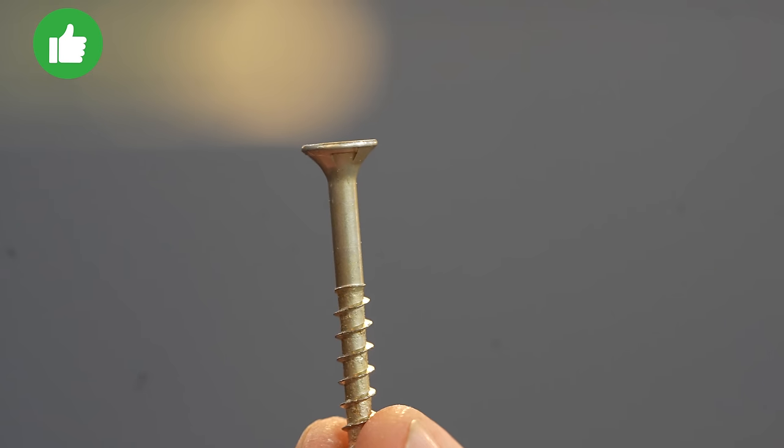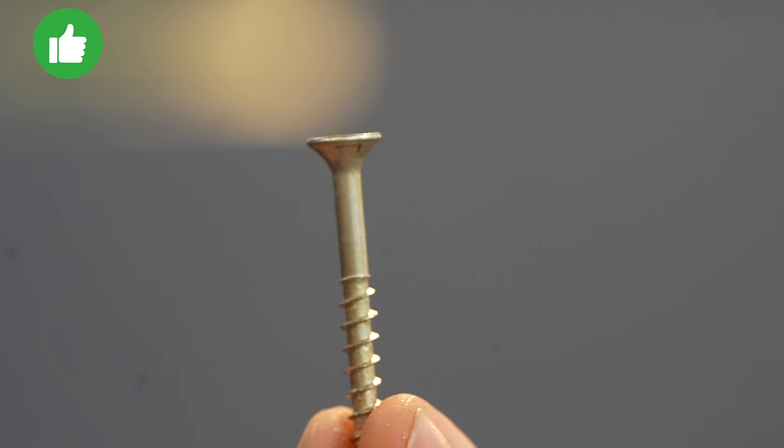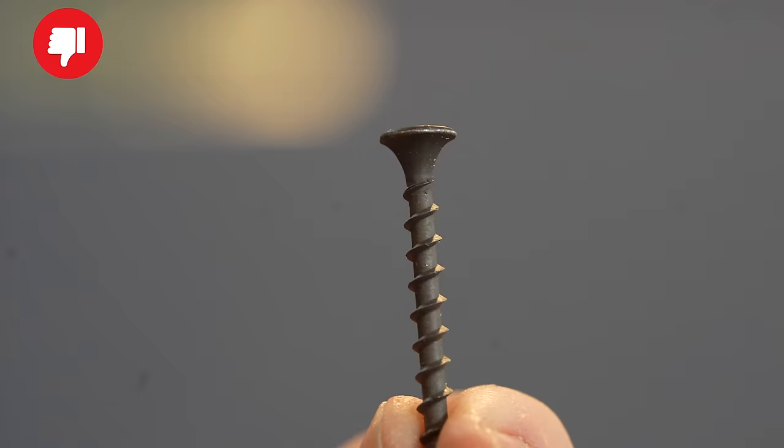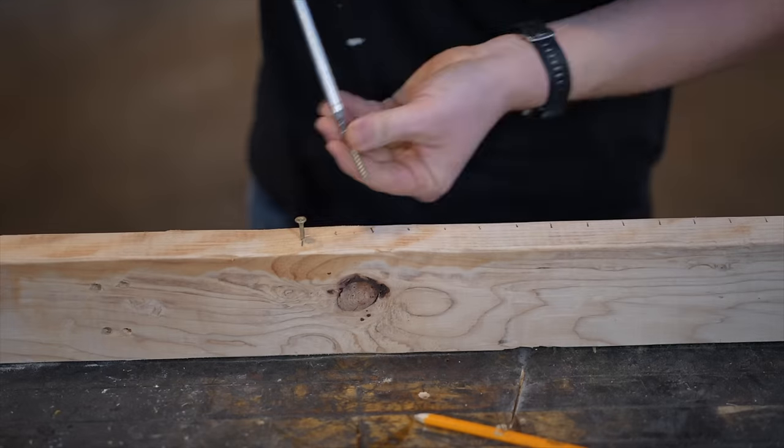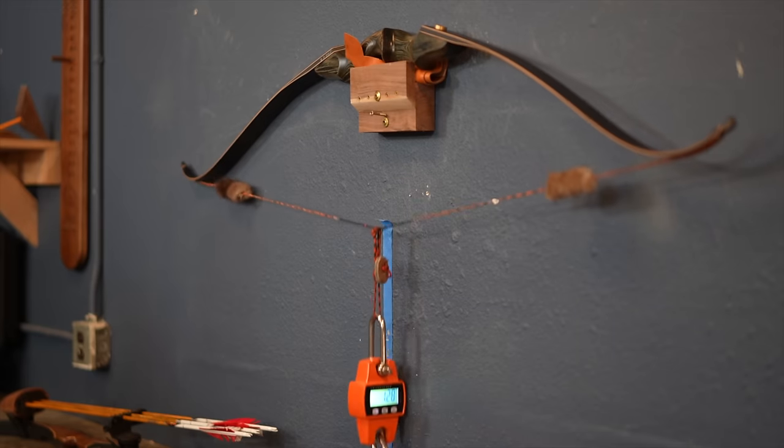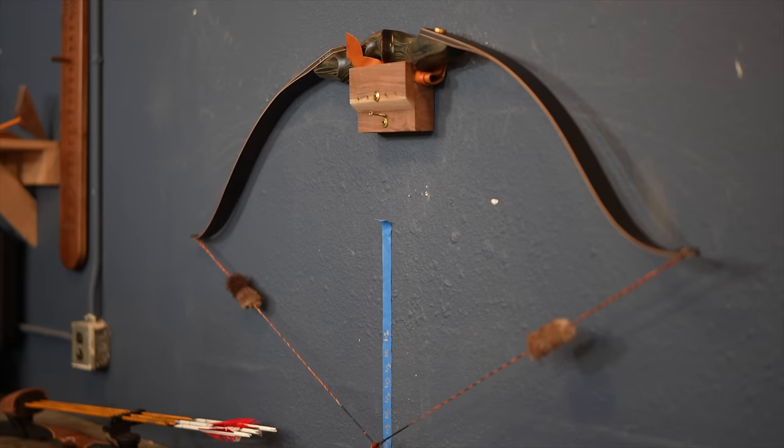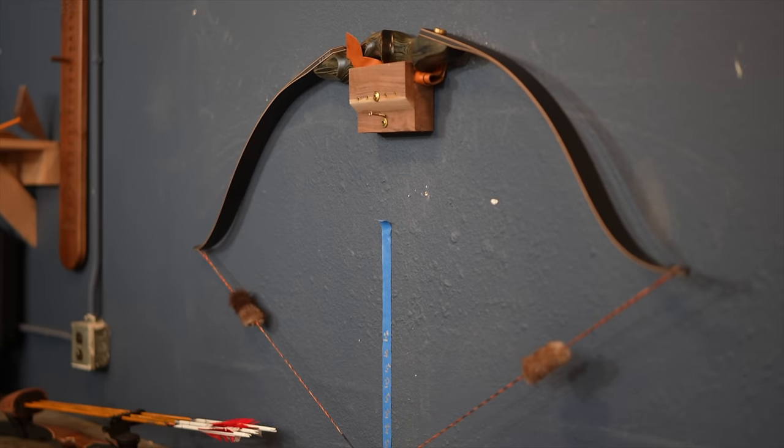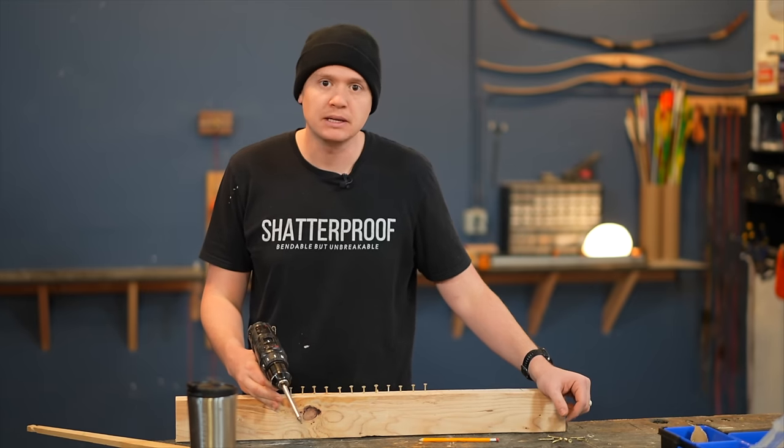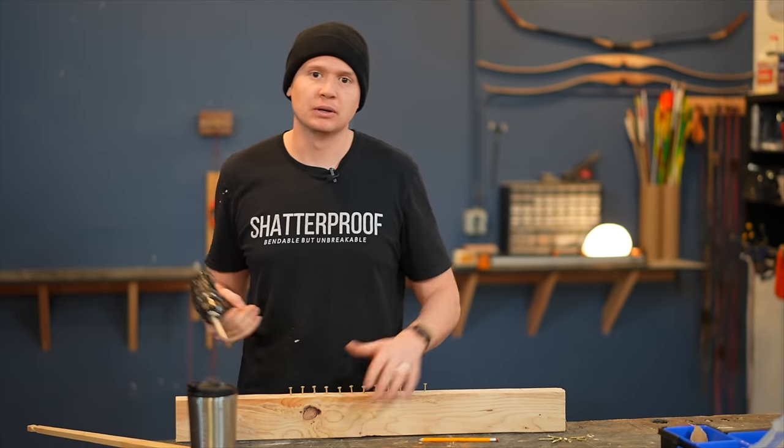You could cut notches into the stick, but instead today I'm going to use screws. The one super important thing to pay attention to is to make sure the screw shaft is smooth. If there's threads going all the way up the shaft, those threads will wear out and potentially cut through your tillering string. What we're building, I call a tillering stick, whereas a tillering tree uses a pulley system to pull the string down. This is the exact tillering stick I would make if I'm planning on making less than five bows maybe.